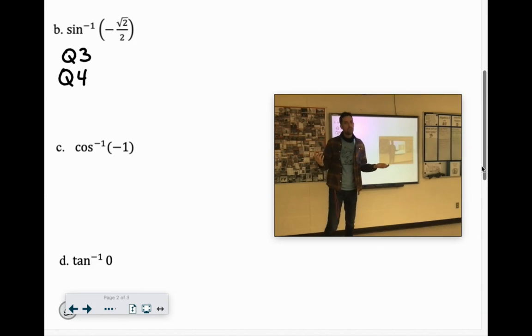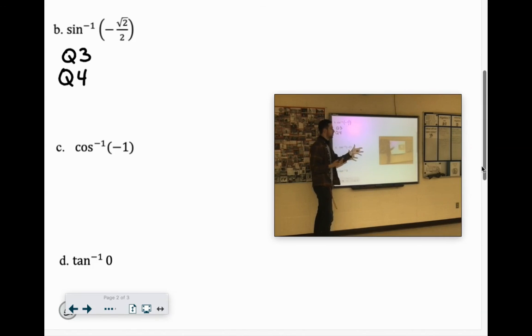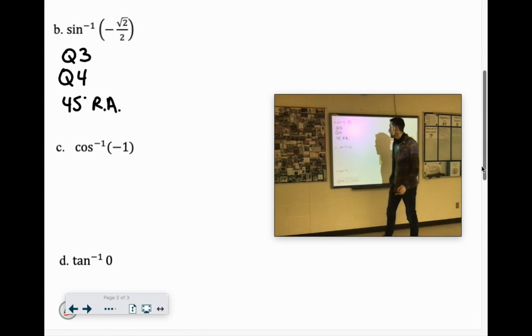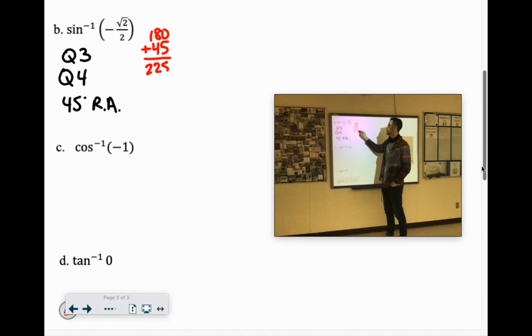We know it's a 45-degree reference angle, because that's the root 2 over 2. So we're going to have to figure out what the angles are. So in quadrant 3, if we have a 45-degree reference angle, that would be 180 plus 45, which is 225 degrees.